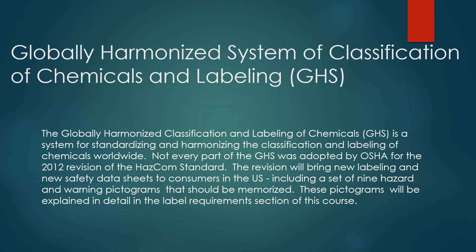The Globally Harmonized Classification and Labeling of Chemicals, GHS, is a system for standardizing and harmonizing the classification and labeling of chemicals worldwide. Not every part of the GHS was adopted by OSHA for the 2012 revision of the HazCom standard. The revision will bring new labeling and new safety data sheets to consumers in the U.S., including a set of nine hazard and warning pictograms that should be memorized. These pictograms will be explained in detail in the label requirements section of this course.